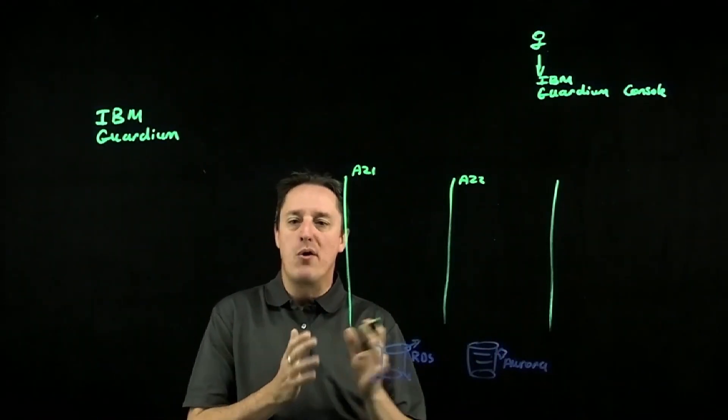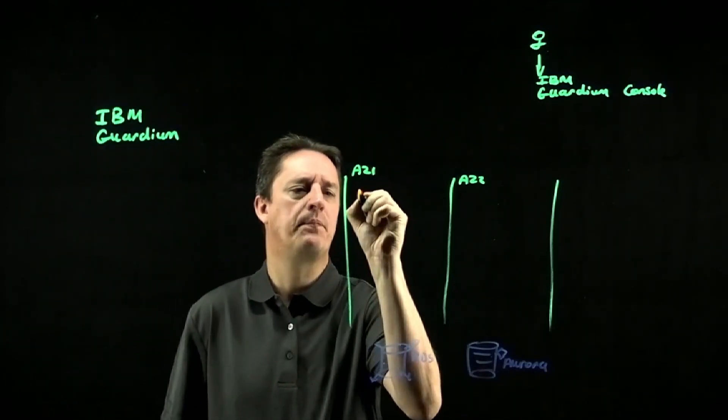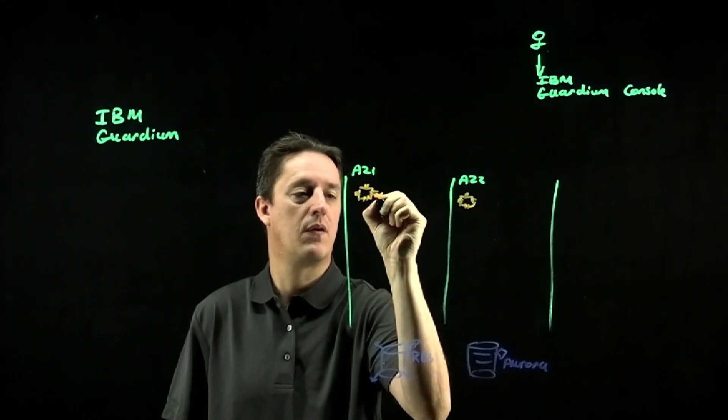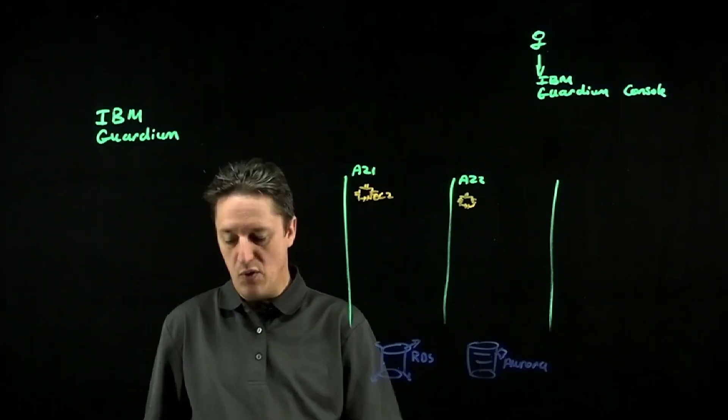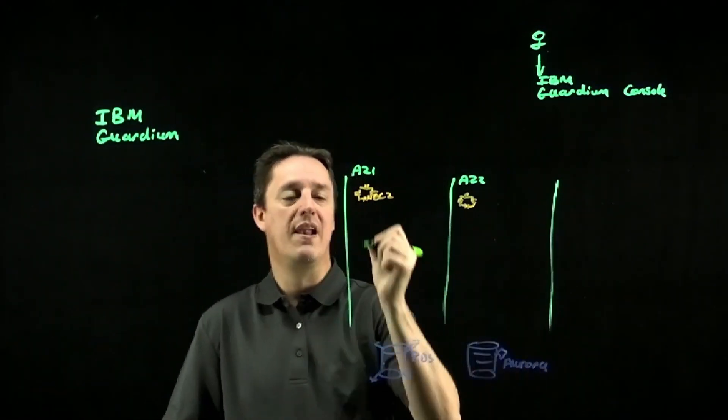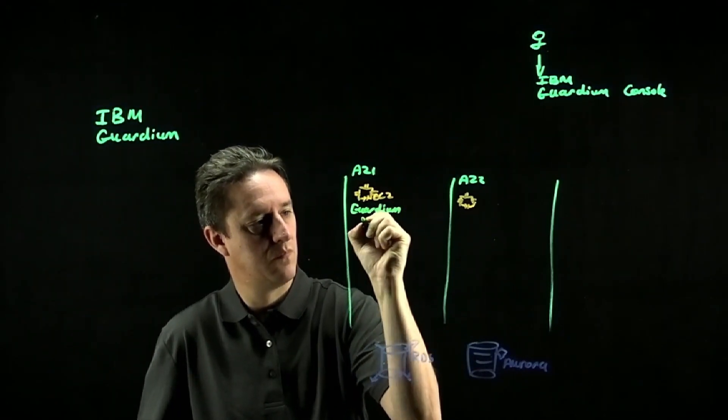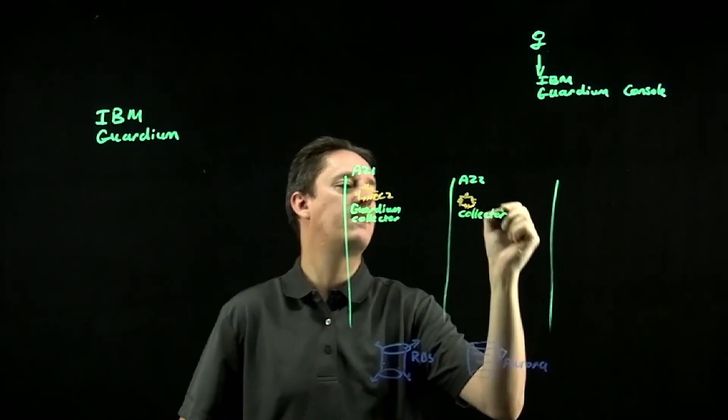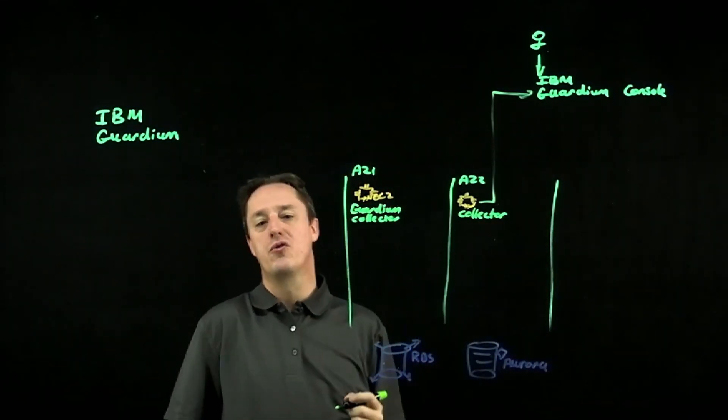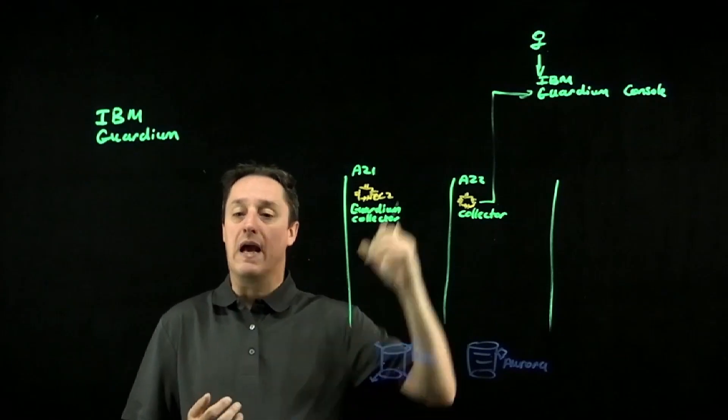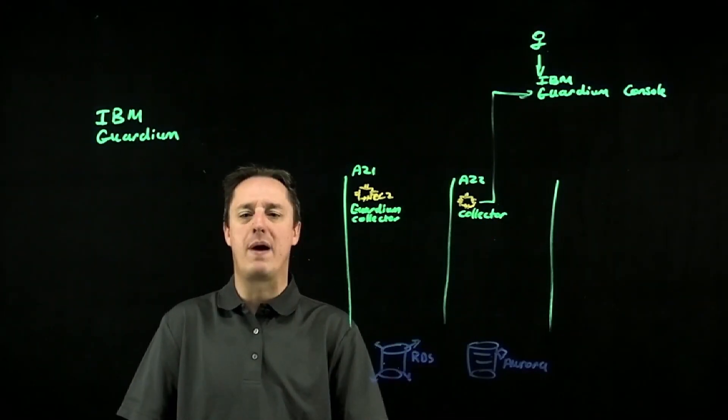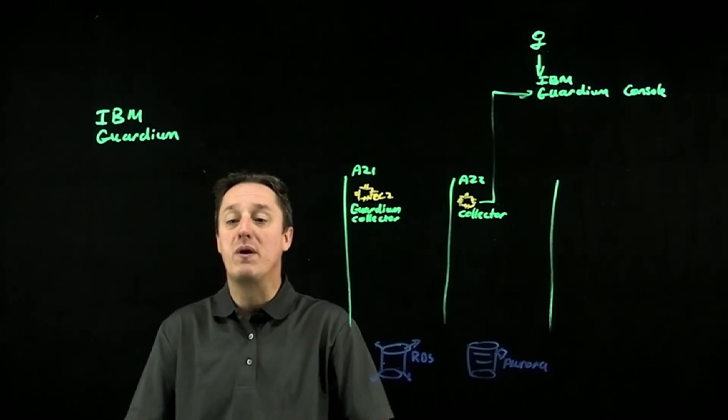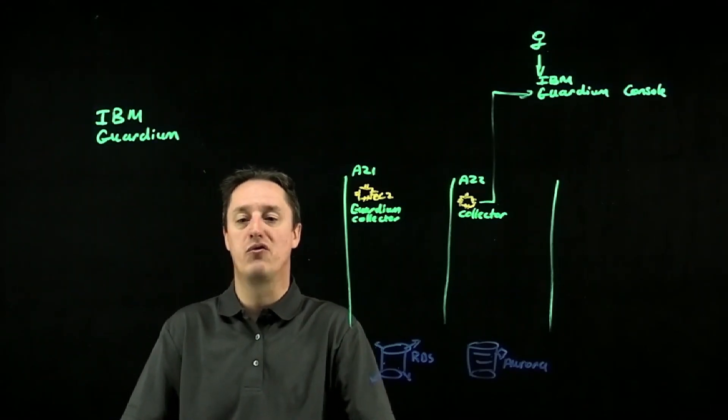And what we will have inside both AZs is typically a collection of EC2 instances, and we will have running on those EC2 instances the Guardium collector. These collectors pass information back to the Guardium console so that I have visibility, and I can visualize, and I can have alerting and metrics based on whatever I've collected from these data sources. The collectors don't only collect things from databases, they could be monitoring other EC2 instances and other workloads within the environment.